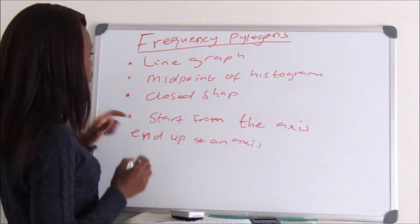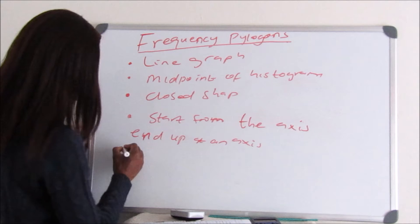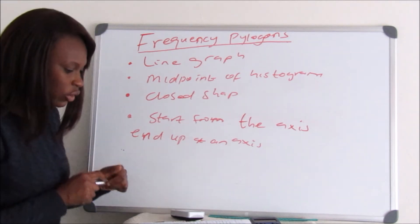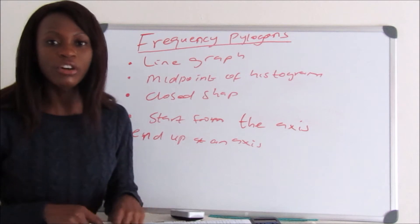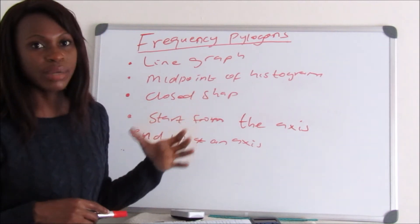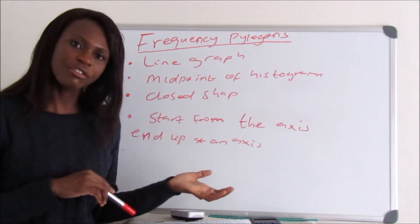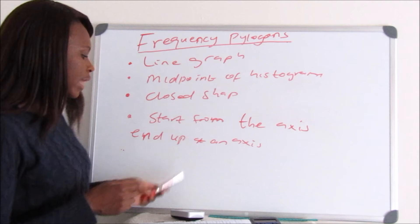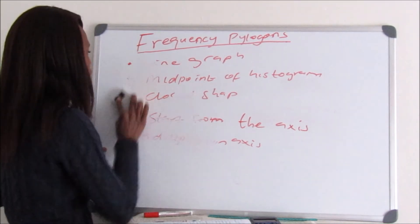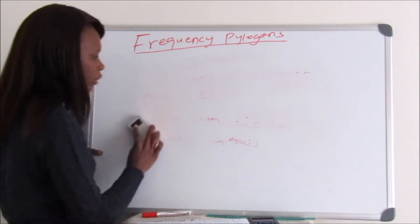There are two ways of constructing a frequency polygon. First, you can use the midpoint of the histogram, or you can use the midpoint of the frequency table and draw straight from the frequency table to construct a frequency polygon without first drawing the histogram.